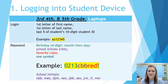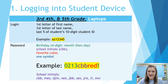Third, fourth, and fifth-grade passwords are made by using the following formula. First, the student's four-digit birthday — two numbers for the month and two numbers for the day. Next, the school initials. Next, the student's favorite color. And last, one symbol. See the example on the slide for a password as well as a reference point for the school initials.